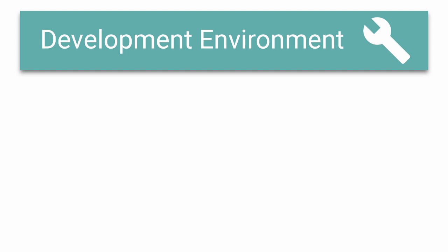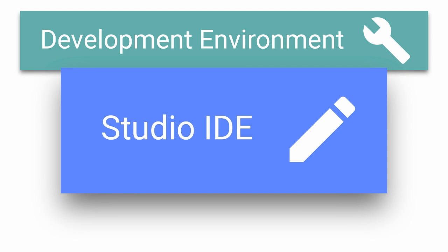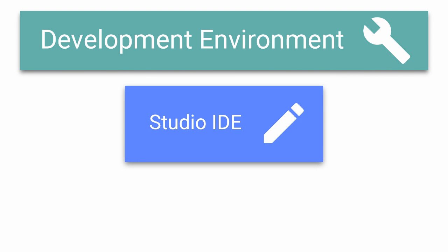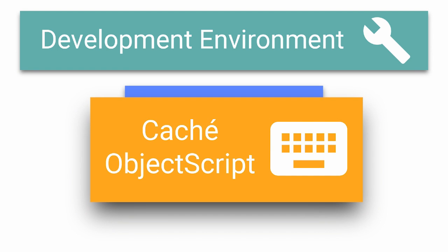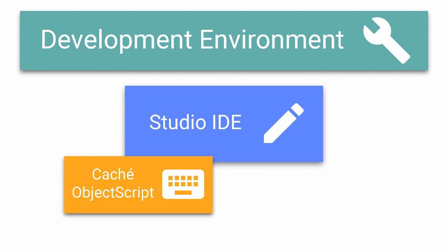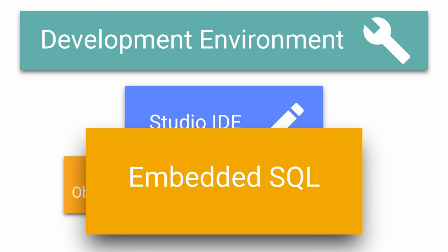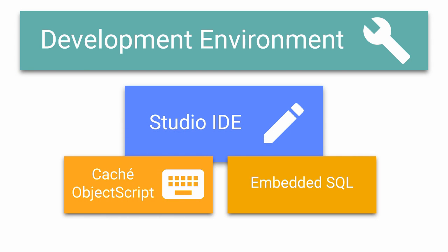As a development environment, Cache also provides many capabilities that assist you in building applications. Studio is the integrated development environment for writing code. Cache ObjectScript, the default programming language used in Cache, provides native access to all supported models. ObjectScript also hosts embedded SQL similar to the procedural languages of other relational databases.